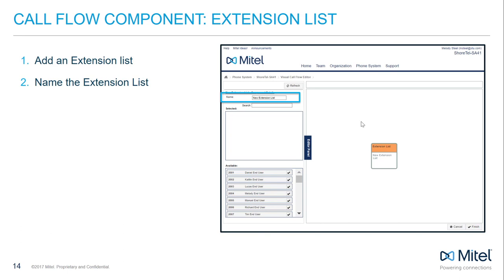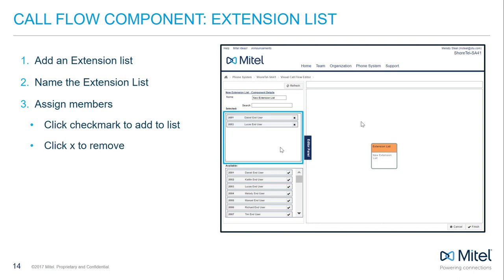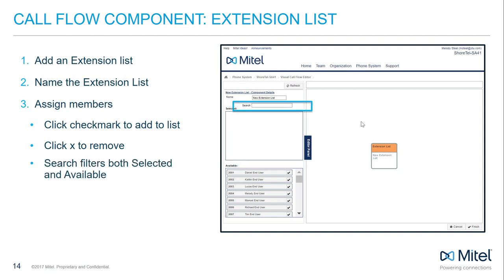Name the extension list something unique. Add and remove users using the selected and available sections. To assign someone, click the checkbox next to their name and extension in the available box. To remove, click the X to the right of their name in the selected box. The search field filters both selected and available users. Click Finish to save.